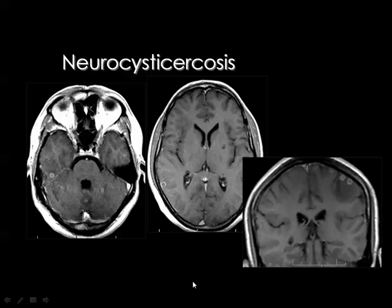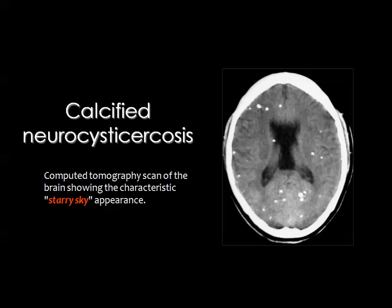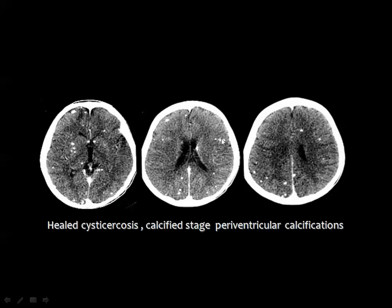If you see a cystic lesion and can find a dot inside by careful inspection, you can diagnose neurocysticercosis. After healing, multiple haphazardly distributed periventricular calcific foci give the characteristic starry sky appearance, which is not pathognomonic for cysticercosis as it can also be seen in healed TB and congenital intracranial infection. The differential diagnosis for scattered brain parenchymal calcifications includes healed cysticercosis, healed tuberculosis, and congenital intracranial infection.